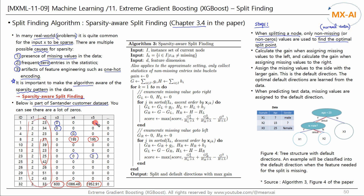Let's consider these zeros as missing values. Next, we calculate the gain when assigning missing values to the left, and calculate another gain when assigning missing values to the right. Then we assign the missing values to the side with the larger gain. This is the default direction for that split, and the optimal default directions are learned from the data.